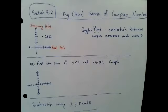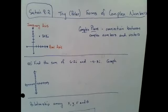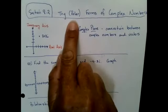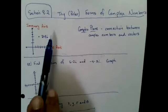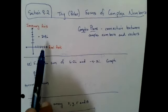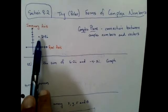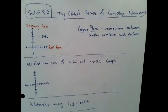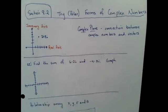Now, section 8.2! We've been talking about complex numbers, but we can take those and turn them into what's called trigonometric form — also known as polar form. Looking at the Cartesian coordinate system, I can take my complex number and plot it: the real part goes on the real axis, the imaginary part on the imaginary axis. For example, 2 + 3i means go 2 on the real axis and 3 on the imaginary axis.